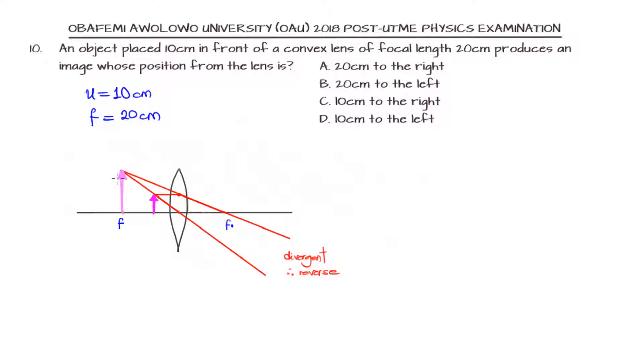From this diagram, since I used the rules of construction of rays of light passing through an object, and because they are divergent I needed to reverse them, I can see that for an object placed between the focal point and the center of curvature, I'm going to have an image that is formed at the focal point.